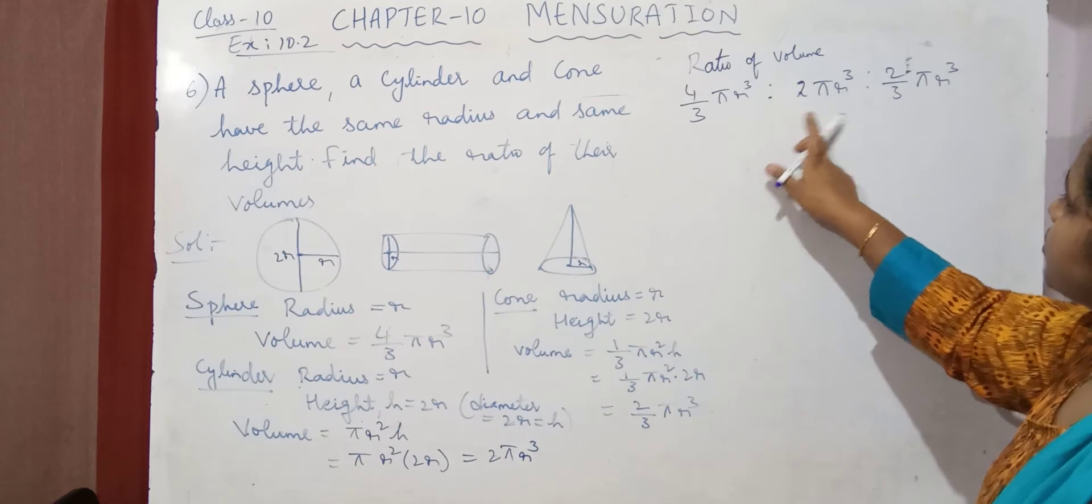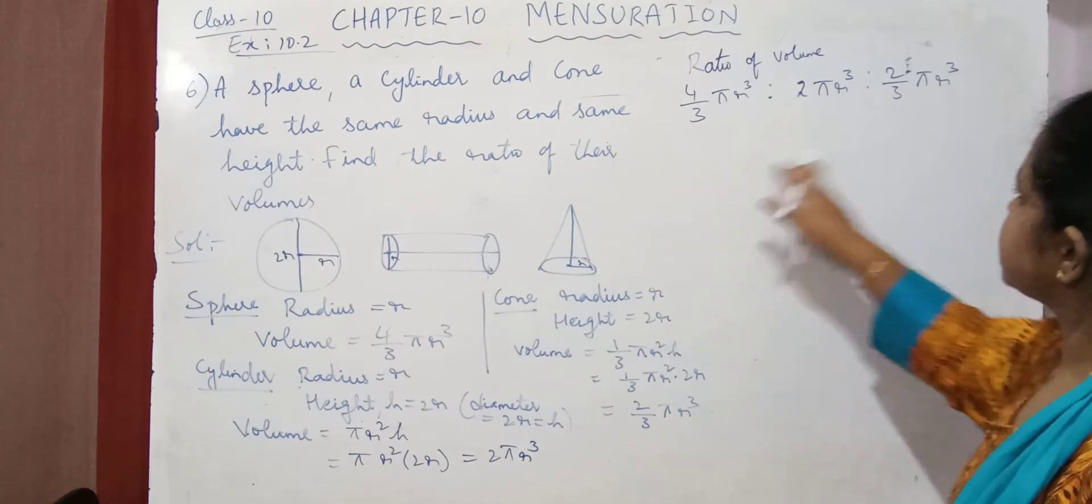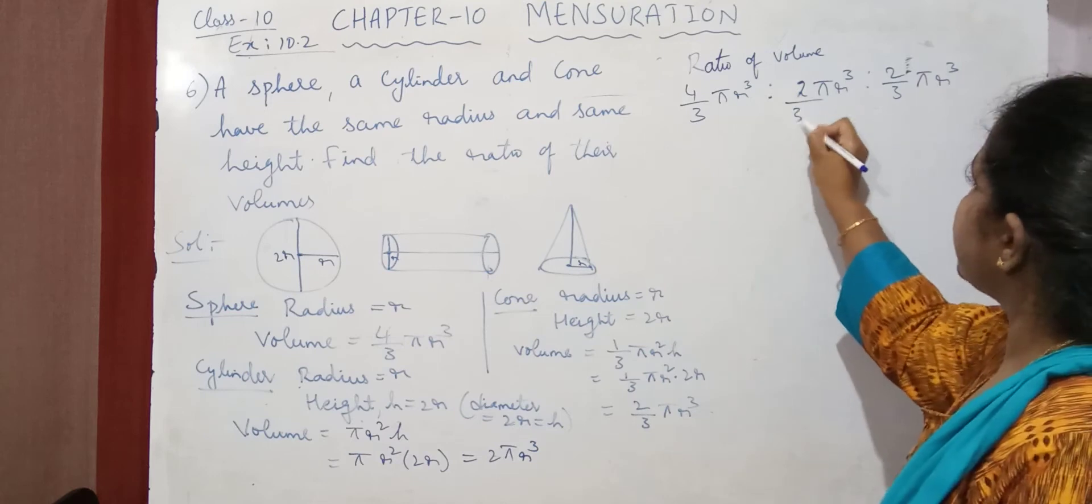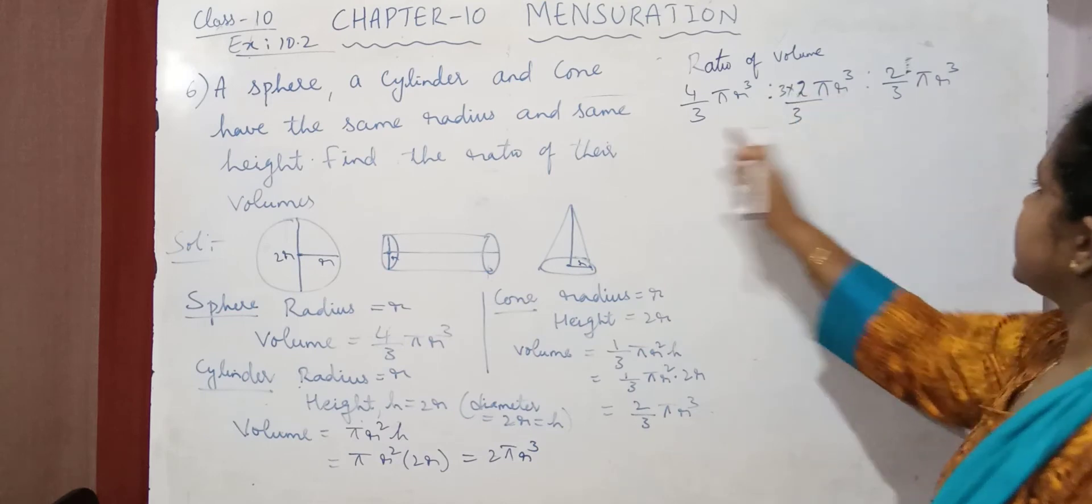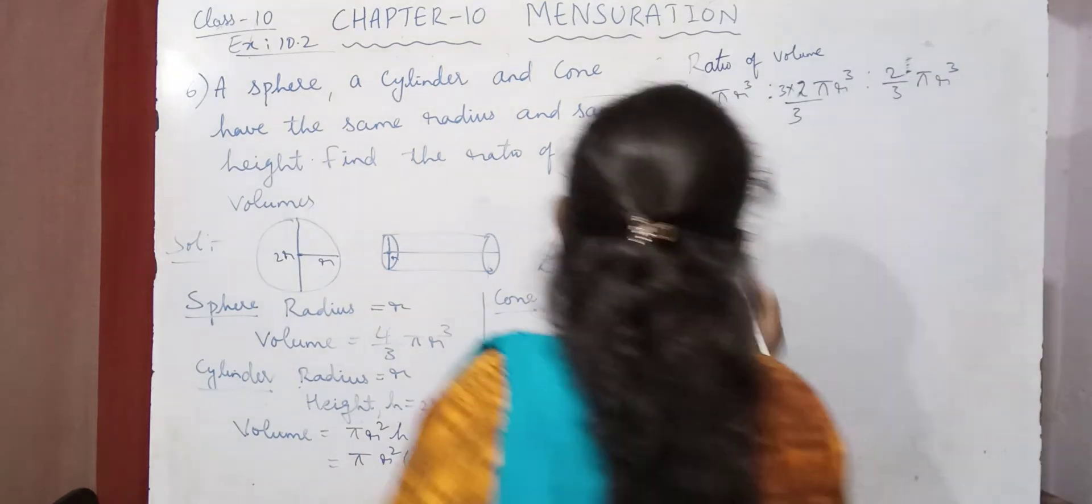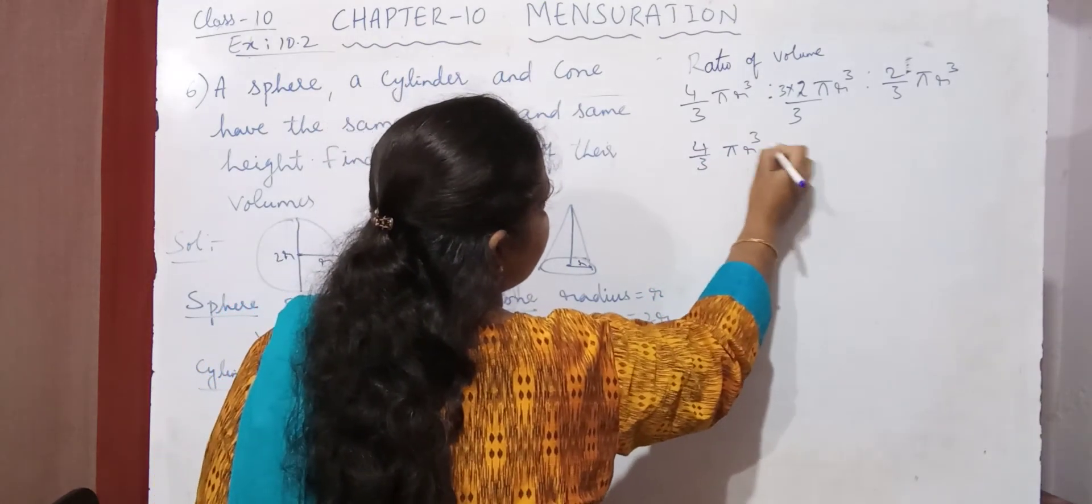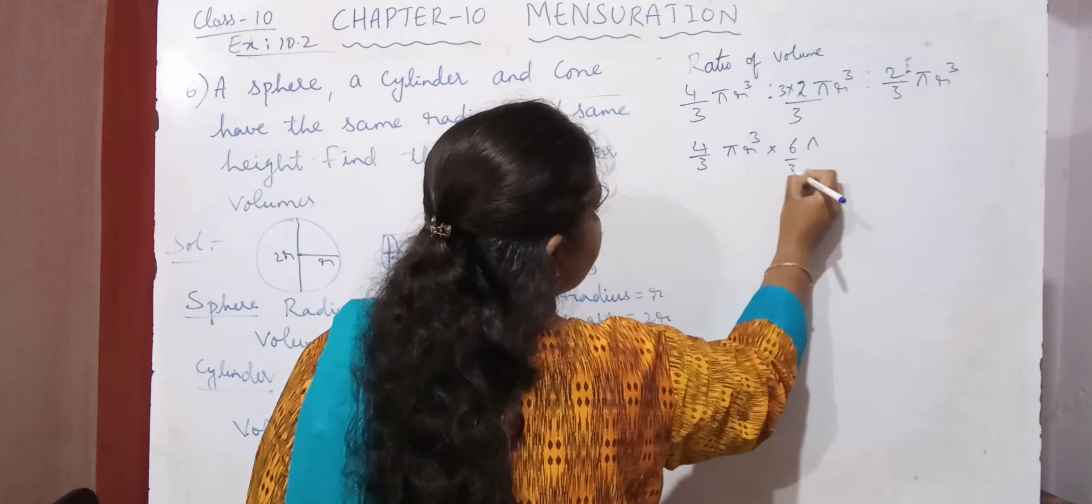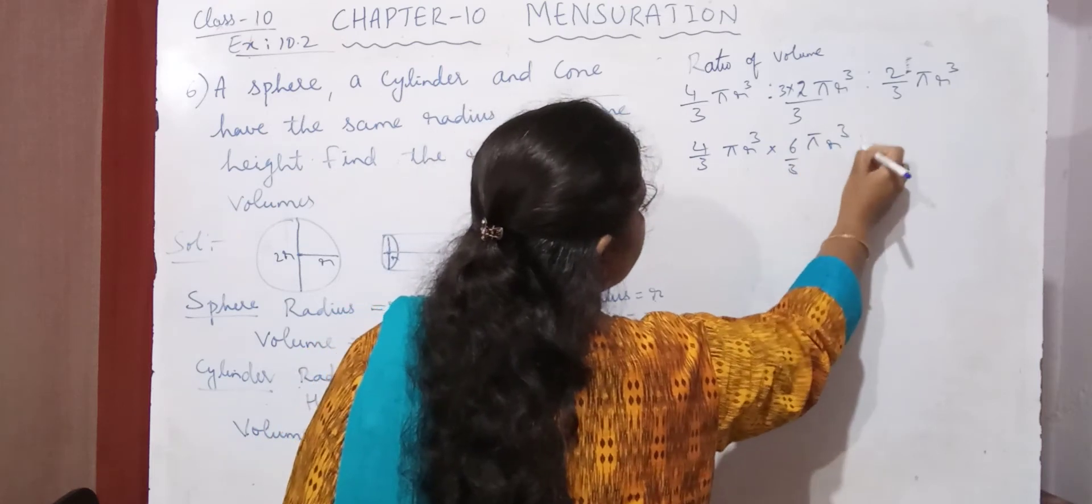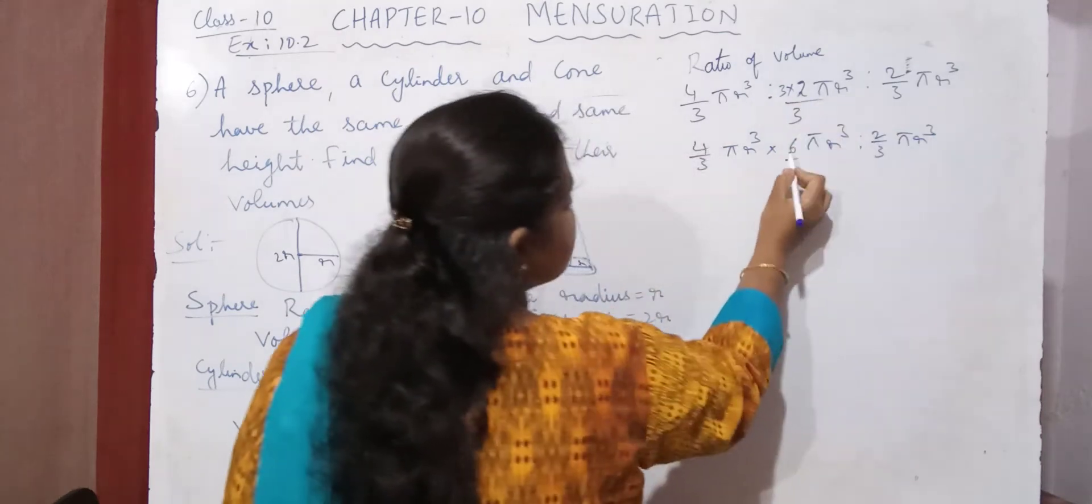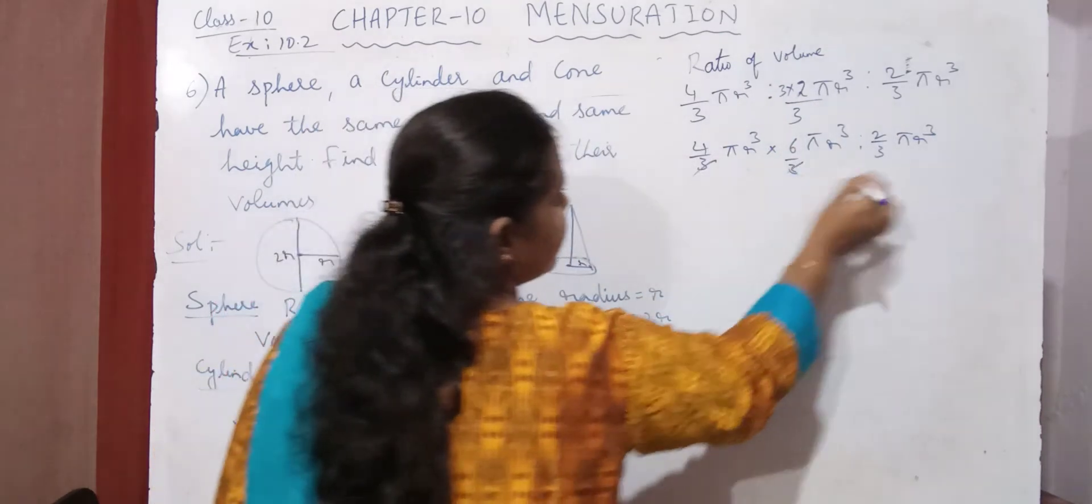I don't have 3 here. So if I have 3 here, I can cancel 3 throughout. So to cancel, I am multiplying and dividing by 3. So then I can cancel 3 throughout. So I get 4 by 3 pi r cube into 3 into 2 is 6 by 3 pi r cube, 2 by 3 pi r cube. This 3 into 2 is 6. So I can cancel throughout.